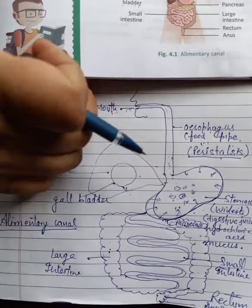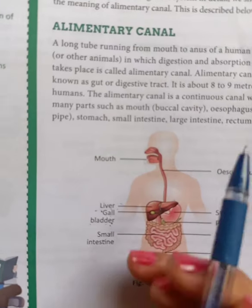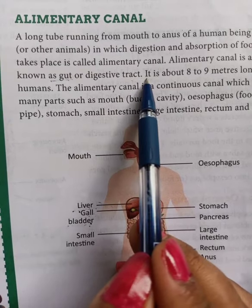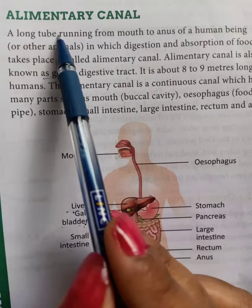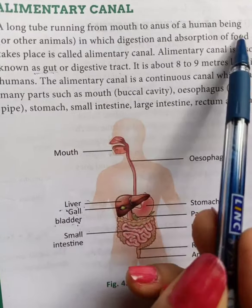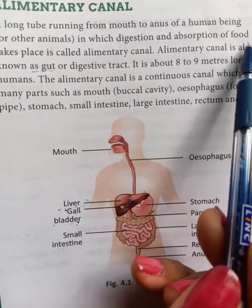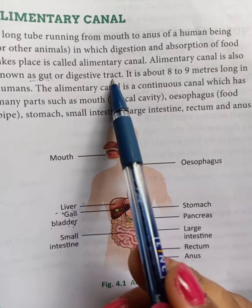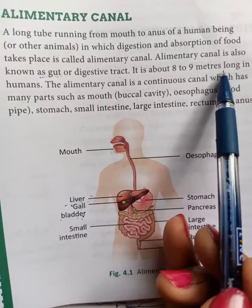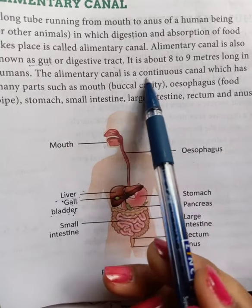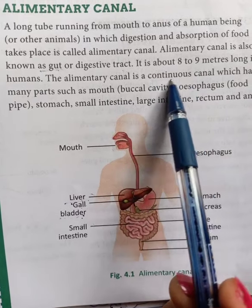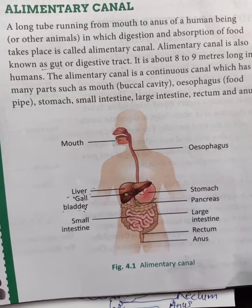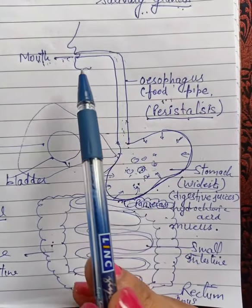The alimentary canal is also known as the gut or digestive tract. A long tube running from the mouth to the anus of a human being, in which the digestion and absorption of food takes place, is called the alimentary canal. It is almost eight to nine meters long, and it is a continuous canal - there is no break in it. So that is called the alimentary canal.